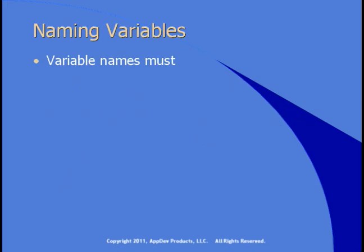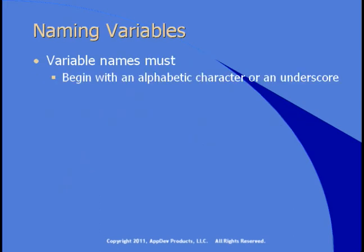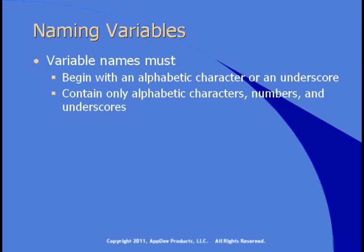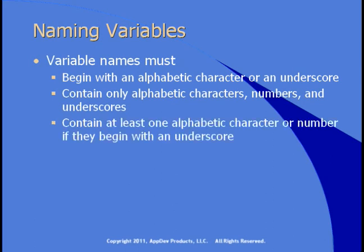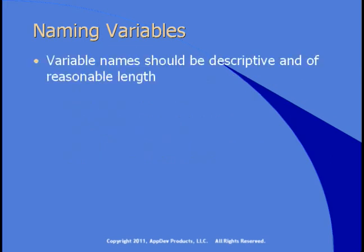There are some rules for variable names. A variable name has to begin with an alphabetic character or an underscore, and then contain only alphabetic characters, numbers, and underscores. If you begin with an underscore, there has to be at least one alphabetic character or number in there. Variable names have to be less than 1,023 characters. Your variable names should be descriptive and of reasonable length.